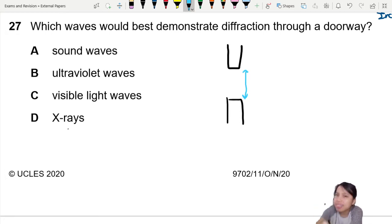Ideally, if you want the best, clearest diffraction, this gap should be very close to the wavelength of the wave. Roughly. So, whatever wave that is.